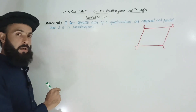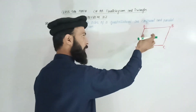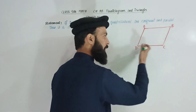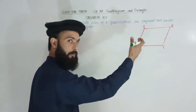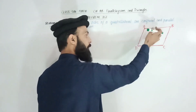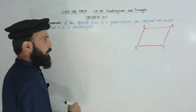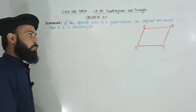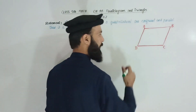Two opposite sides of the quadrilateral are parallel. Suppose that AB is parallel to CD and AD is parallel to BC, then AB is parallel to CD. If you look at the two sides, AB is parallel to CD. I will prove AD is parallel to BC.